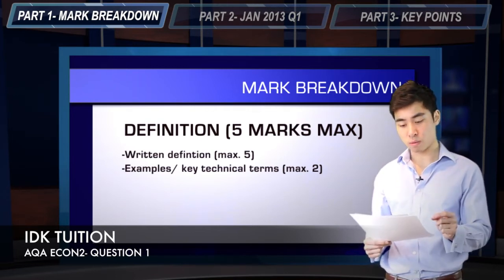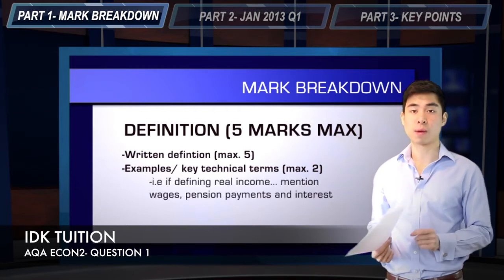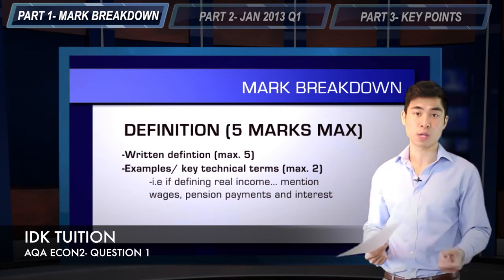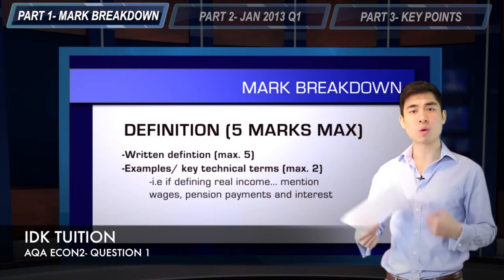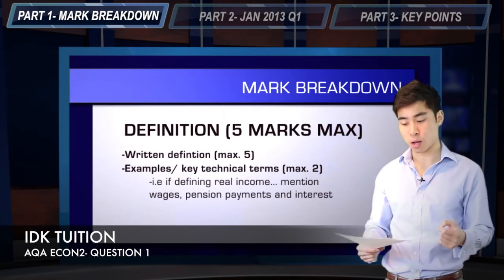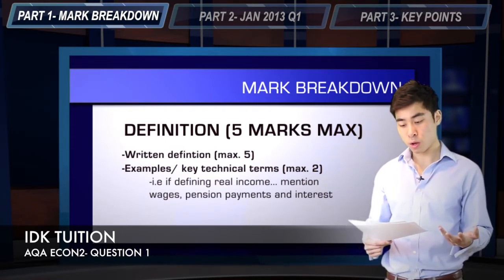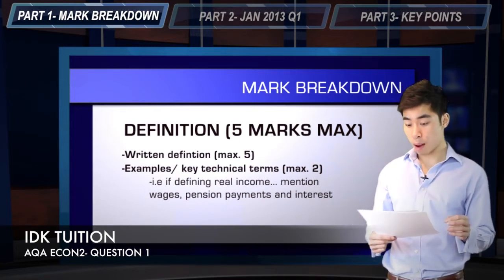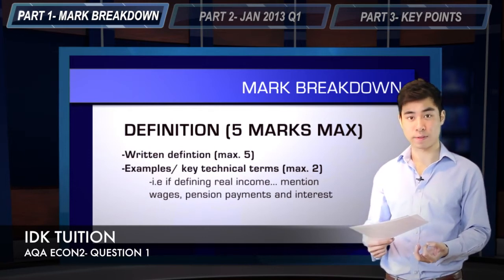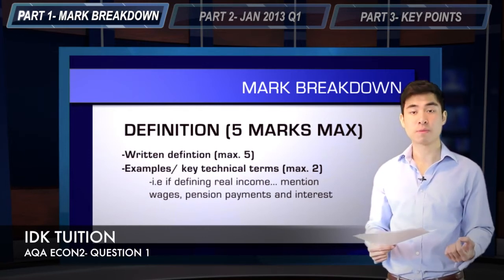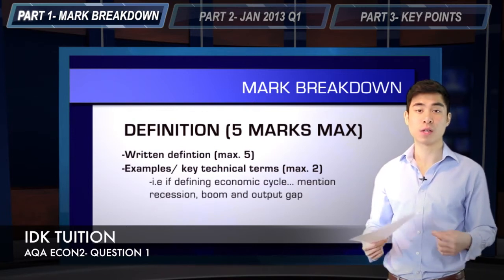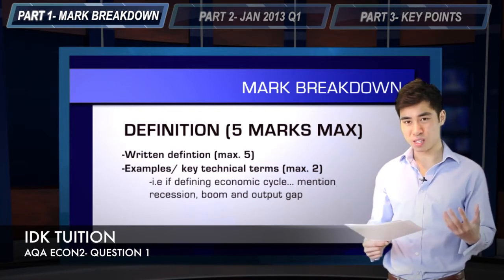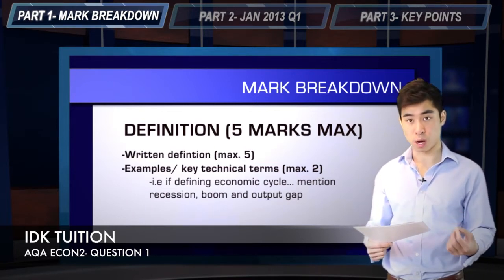The first of these is going to be examples and other technical terms. Make sure the language that you're using is very specific to your Unit 2 concept, and you're including key technical terms. You don't need a definition within the definition, but these can be thought of as examples. For instance, if you're defining the term real income, types of terms you could include are wages, pension payments, and interest. These are obviously technical terms used in Unit 2, and you don't need to define these but can include them as examples of real income.